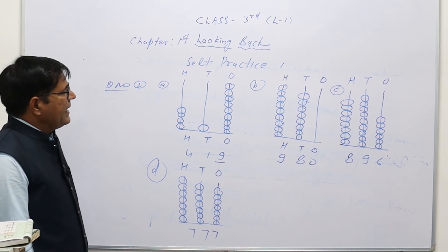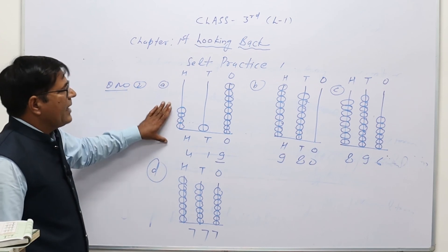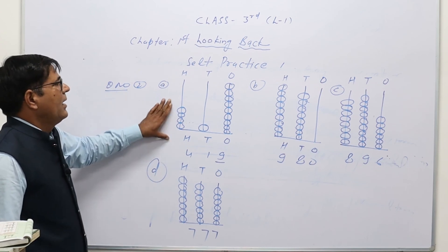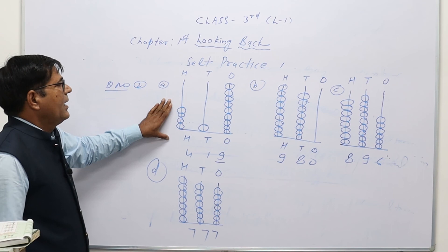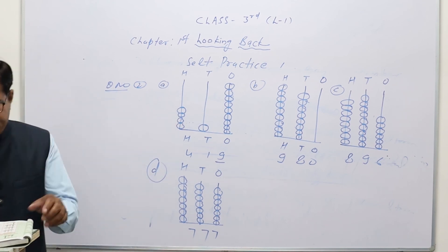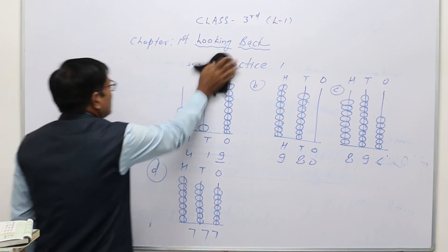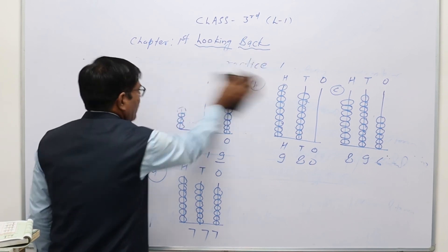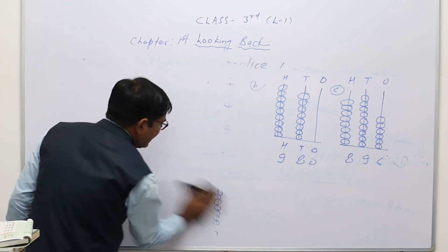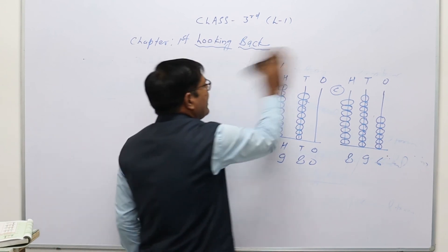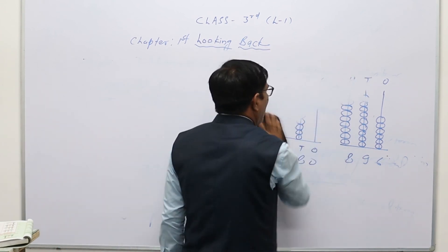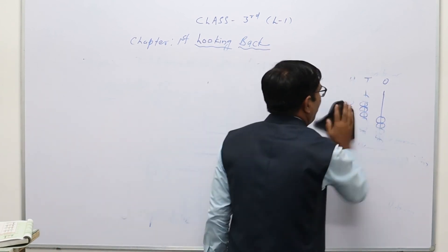This is how you can represent a given number in abacus form. Now question number three: the abacus form is given and we have to find the standard form from it.